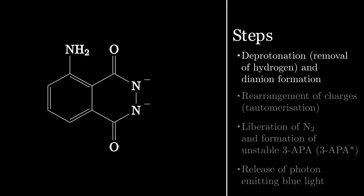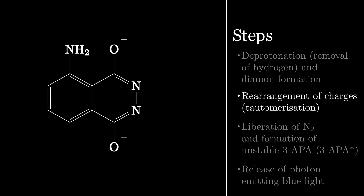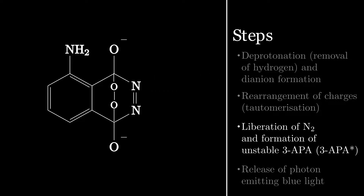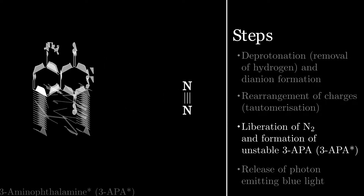Then, to make the molecule relatively more stable, there's a rearrangement of electrons resulting in what's known as a keto-enol tautomerization. Following this, oxygen produced from the dissolution of the activator in water attacks, and with the N2 molecule being really stable and a good leaving group, it leaves, leaving behind an energetically unstable version of 3-aminophthalamine.